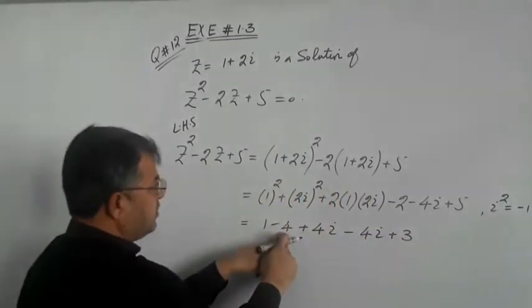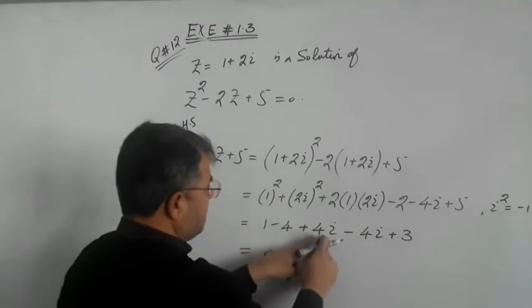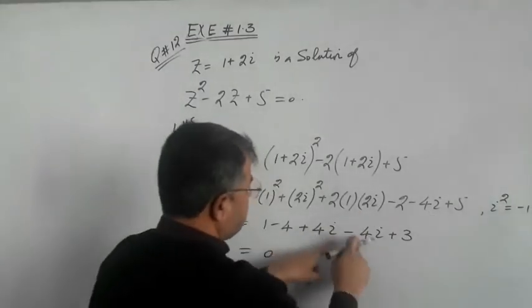Minus 1 is equal to minus 4 plus simplification of 4 iota minus 4 iota.